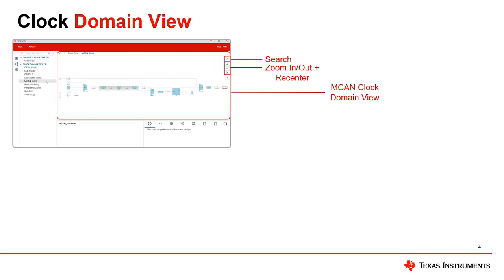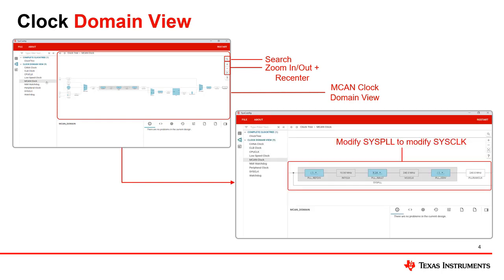In this MCAN clock view, sysconfig displays all the clocking parts relevant to the subsystem, including the system bus clock, also known as sysclock. In this video, we'll see the effects of modifying the syspll, which sets the sysclock, which ultimately sets the MCAN clock through sysconfig.